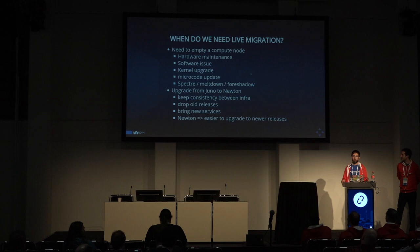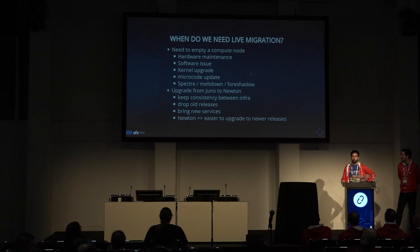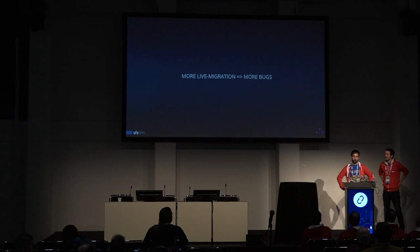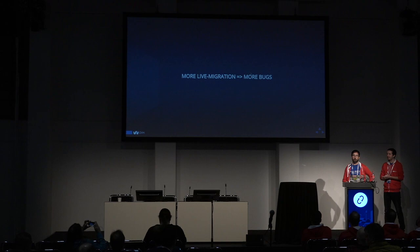Juno was running on Ubuntu Trusty and Newton on Xenial. To keep consistency across the infrastructure, we needed to live migrate all the QEMU processes running on Trusty to Xenial. We will explain that at the end of the presentation. And of course, with more live migrations, we triggered some bugs, and we will try to explain the bugs we encountered and how we fixed them.